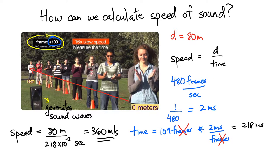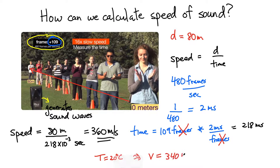There's a finite speed at which the wave will travel — in this case we got around 360 meters per second. If you look it up in textbooks, the speed of sound depends on temperature. At a temperature of 20 degrees Celsius, the speed of sound is approximately 340 meters per second.